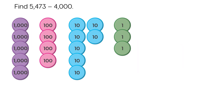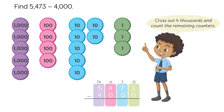Find five thousand four hundred seventy-three minus four thousand. Five thousand four hundred seventy-three minus four thousand equals one thousand four hundred seventy-three.